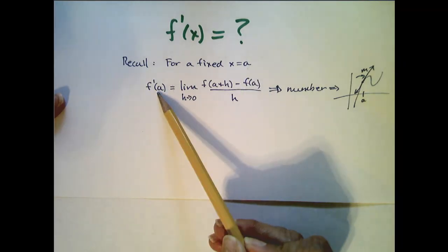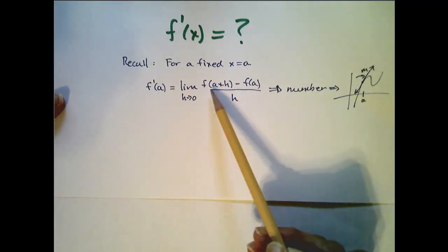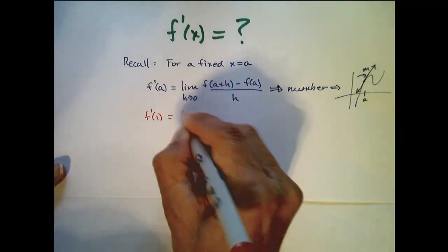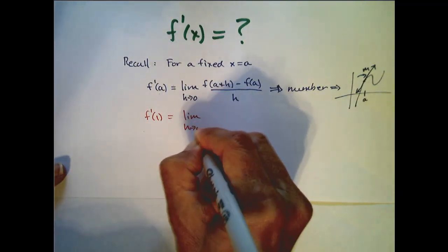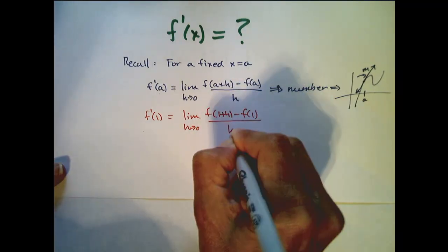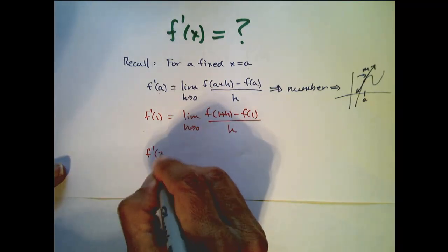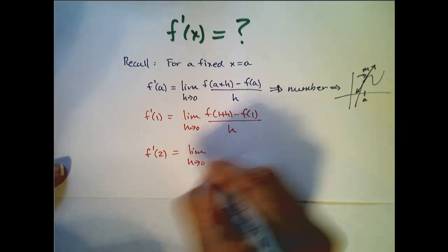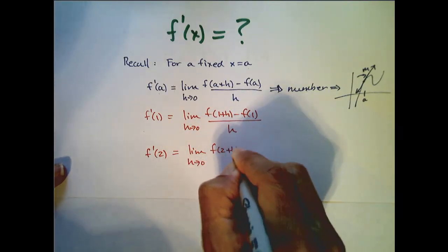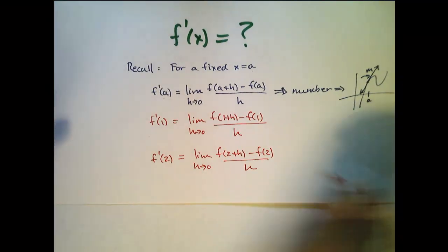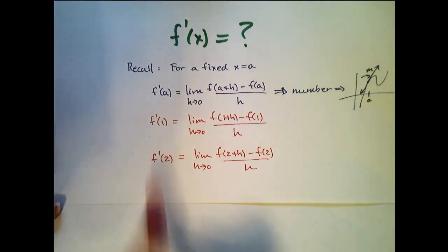So I would look at f prime of 1 as being the limit as h goes to 0. So f prime of 1 would be the limit as h goes to 0 of f of 1 plus h minus f of 1 all over h. And then if I wanted to find f prime of 2, I would have to look at a new limit: the limit as h goes to 0, f of 2 plus h minus f of 2 all over h. And if I wanted you to keep going to find the derivative of f at 3 or 4 or any other value, I would have to keep taking that limit.